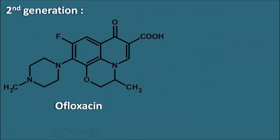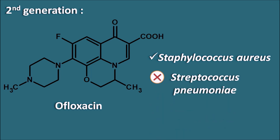Within the second generation, another drug is ofloxacin. Ofloxacin has a connection between the groups at the first and eighth positions, giving it one additional ring compared with ciprofloxacin and norfloxacin. Its spectrum of activity is extended to Staphylococcus aureus infections — ciprofloxacin is not effective against MRSA, but ofloxacin is effective against Staphylococcus aureus. However, ofloxacin remains ineffective against Streptococcus infections.